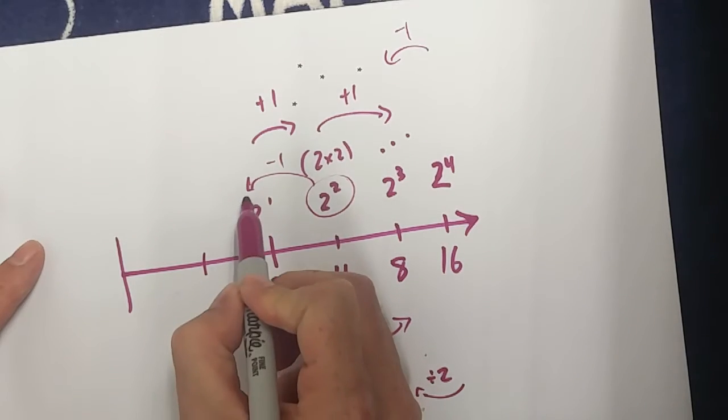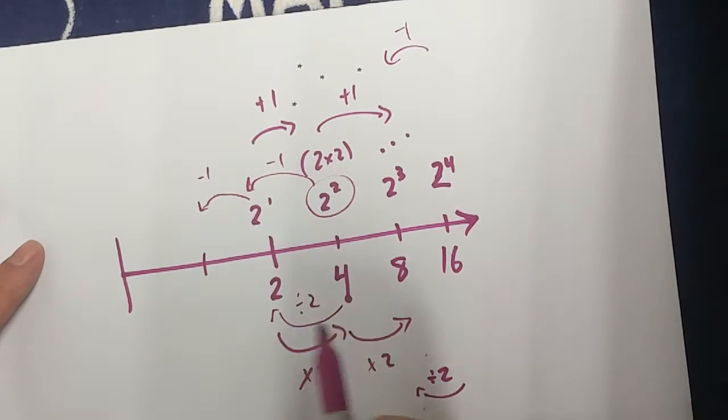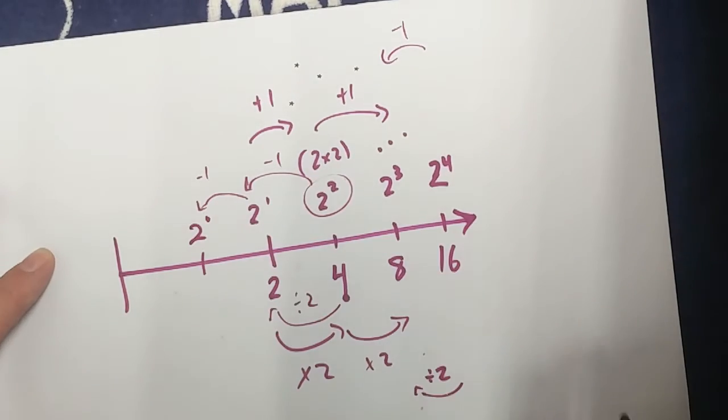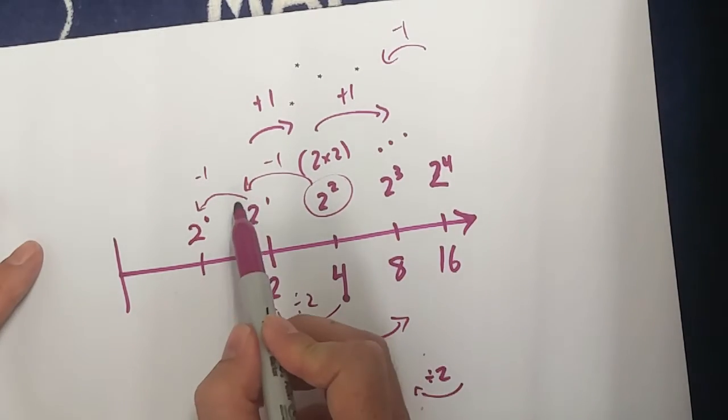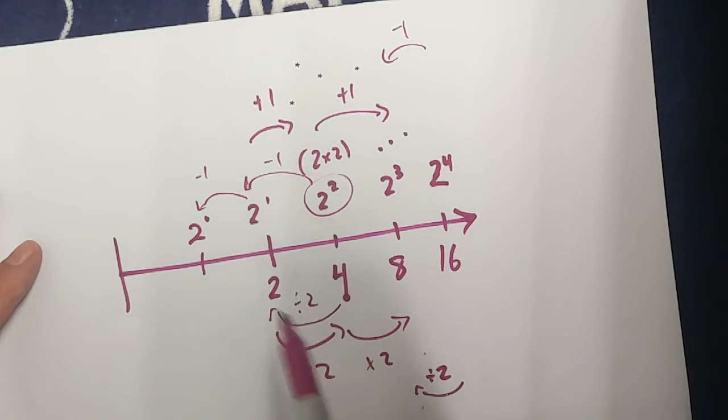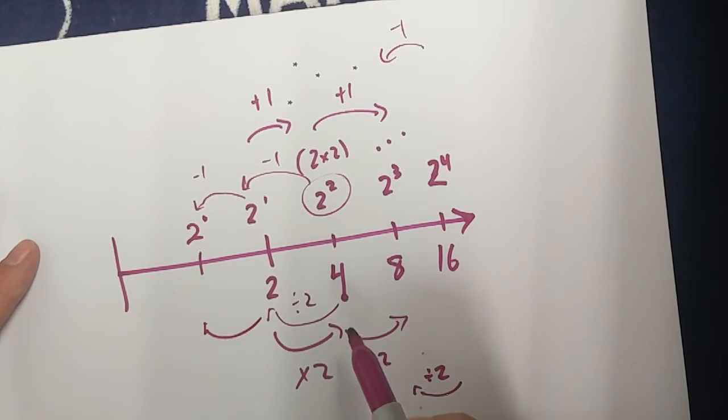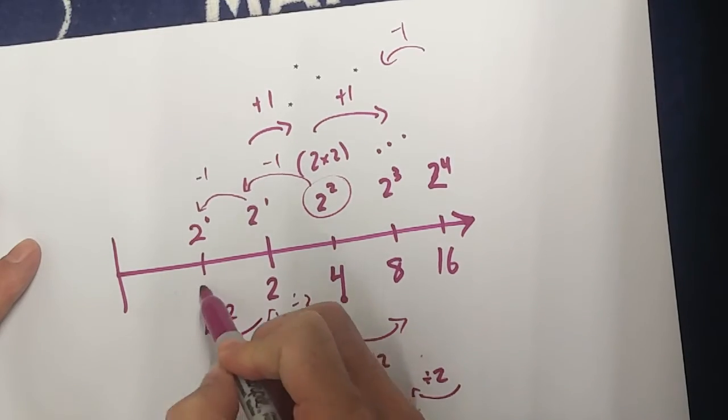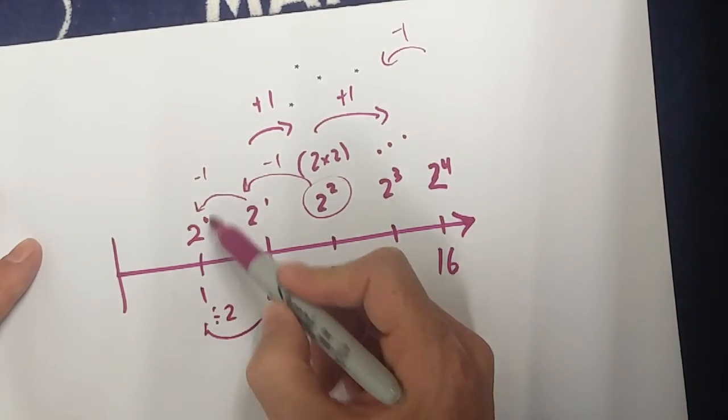Well, what if I go down again? If I subtract 1 exponent, that means 1 minus 1, 2 to the power of 0. If I keep that pattern, by subtracting 1 exponent, it means I have to half my value. What's 2 divided by 2? Well, that's 1. So 2 to the power of 0 is 1.